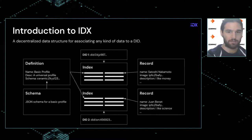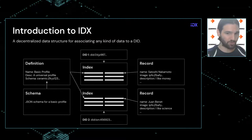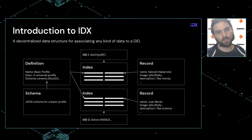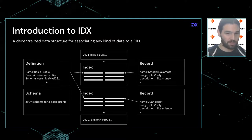When user two comes, the same definition stream ID is a key in their index and they create a separate record, which is its own stream containing their profile. Now you have thousands of users of your app — they all build on one common data definition, and each of the corresponding data records are stored separately in streams.